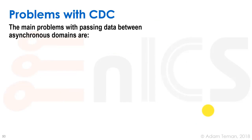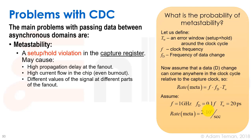The main problem with CDC when passing data between asynchronous domains is this metastability effect. A setup or hold violation in the capture register can cause high propagation delay at the fan-out, high current flow in the chip due to a median state causing short-circuit current, and different values of the signal at different parts of the fan-out. This is completely non-digital behavior.